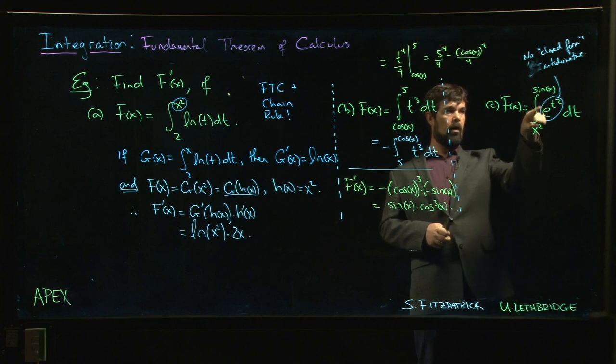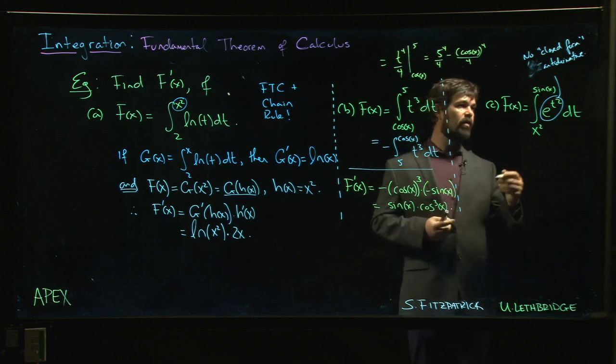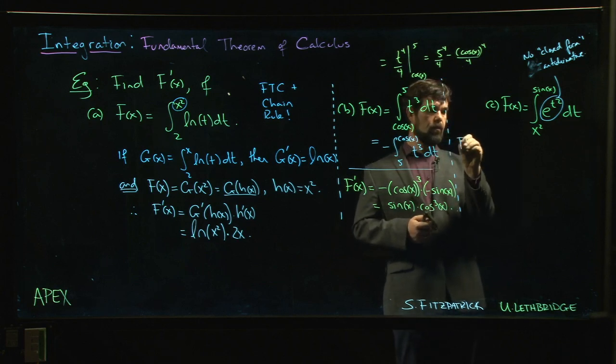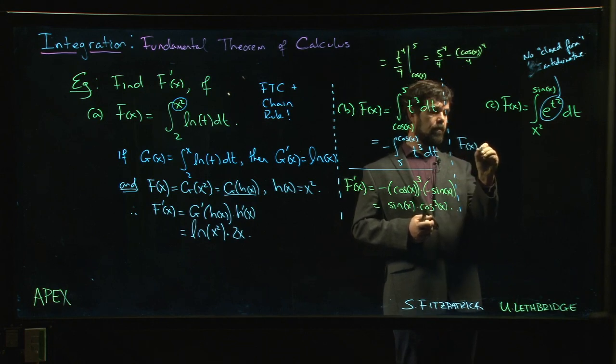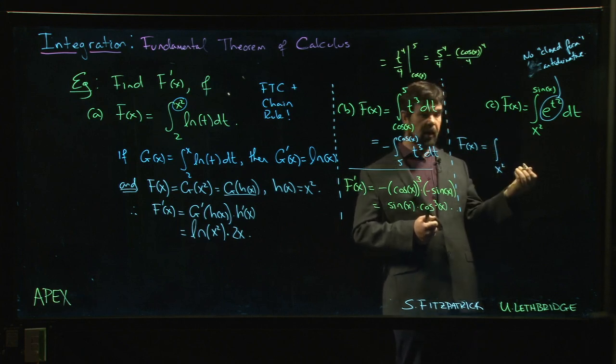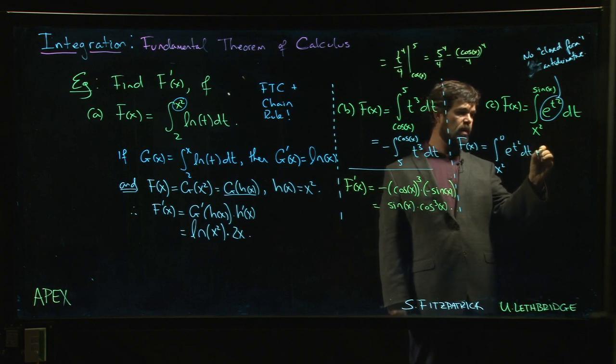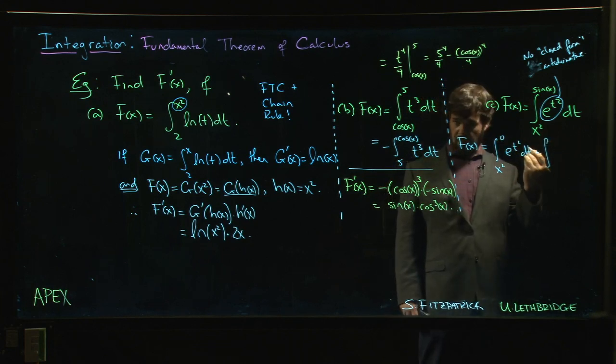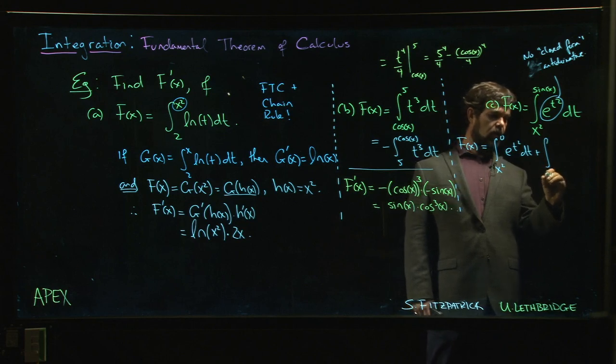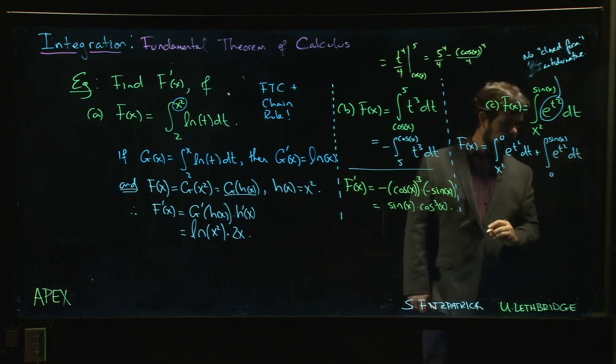Both the lower and the upper limit of integration depend on x. So the first thing we have to do is split things up. Remember, we can go from the lower limit to some intermediate value—I'm going to put 0. And I want to emphasize that there's nothing special about 0 here. We could use any number. If you want to put 100 here, you want to put pi, it doesn't matter. All we need is a constant. Okay, split that up.